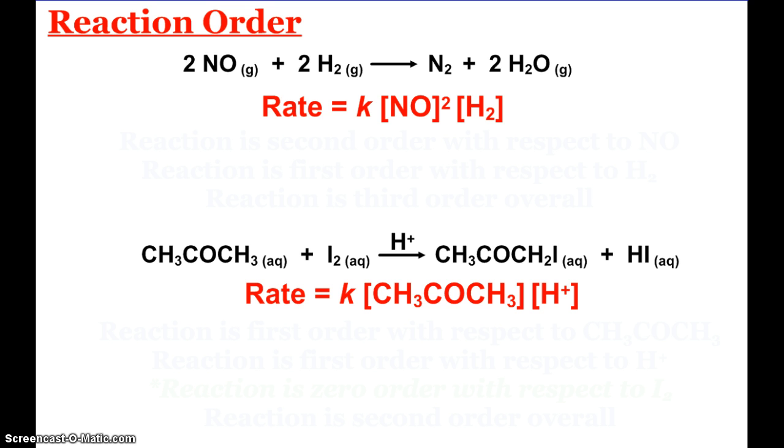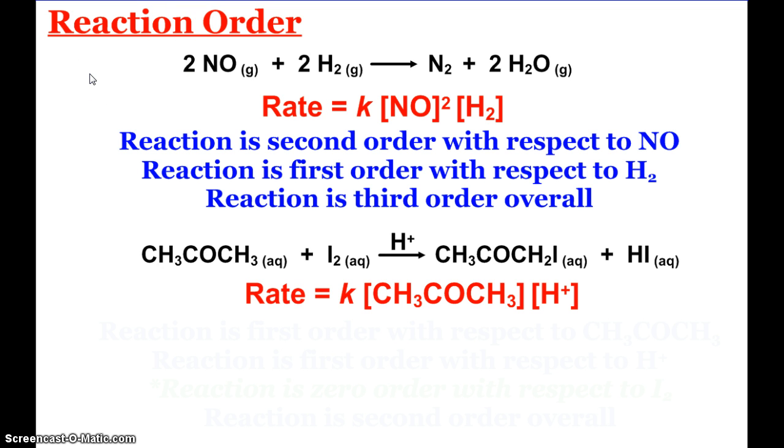Let's look at another example. Here we see the reaction of nitrogen monoxide and hydrogen. Experimentally, the rate is found to be K times the concentration of nitrogen monoxide squared times the concentration of hydrogen. We say that this reaction is second order with respect to nitrogen monoxide, first order with respect to hydrogen, and overall third order, since 2 plus 1 is 3.